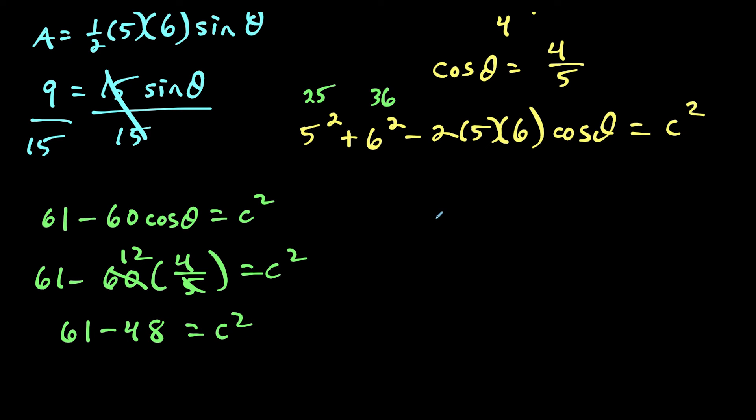And now 61 minus 48 is 13. So 13 equals c squared, which tells us the length of the third side, c, is equal to the square root of 13.